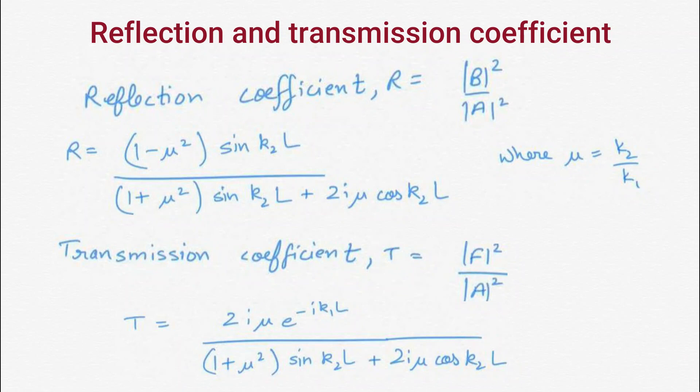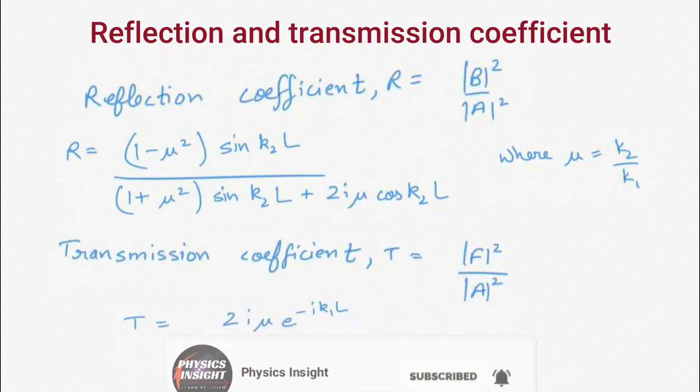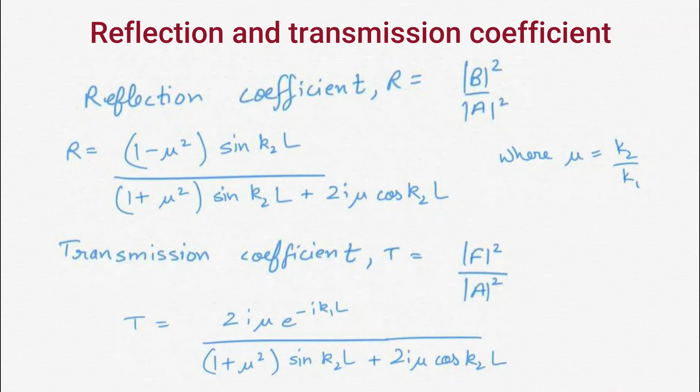Here A is the coefficient corresponding to the incident wave, B is the coefficient corresponding to the reflected wave, and F is the coefficient corresponding to the transmitted wave. In the expression of transmission coefficient and reflection coefficient, we see that they also depend on the width of the potential barrier. So quantum tunneling also depends upon the width of the potential barrier which is given by this expression.